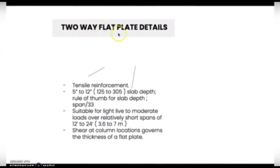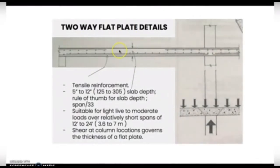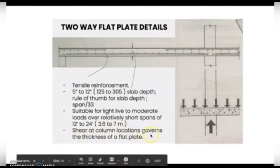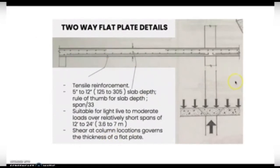This is the two-way flat plate details. Here is the tensile reinforcement, and here is the measurement — it must be 5 inches to 12 inches, which is 125 to 305 mm. The rule of thumb for slab depth is span over 30. It is suitable for light to moderate loads of relatively short spans of 12 to 24 inches, which is 3.6 to 7 meters. It is also shear-critical at column locations, considering the thickness of the flat plate.